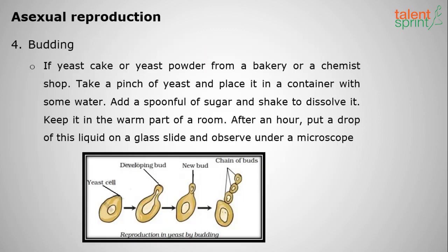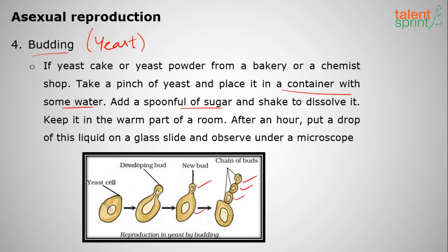The fourth method is budding, which commonly occurs in yeast — a single-celled organism found in bakeries and baking items. When yeast is placed in water with a spoonful of sugar added, it forms new buds. During this process, the nucleus divides into two or several parts, forming new buds and new offspring.